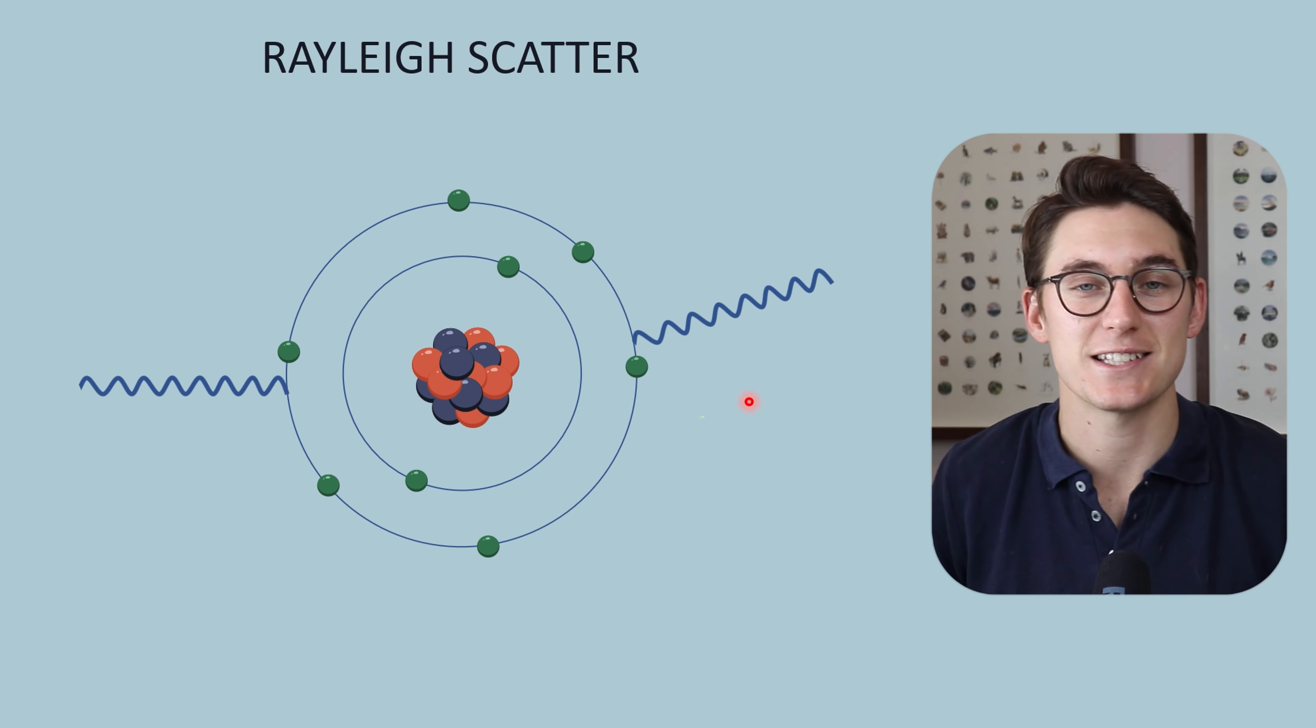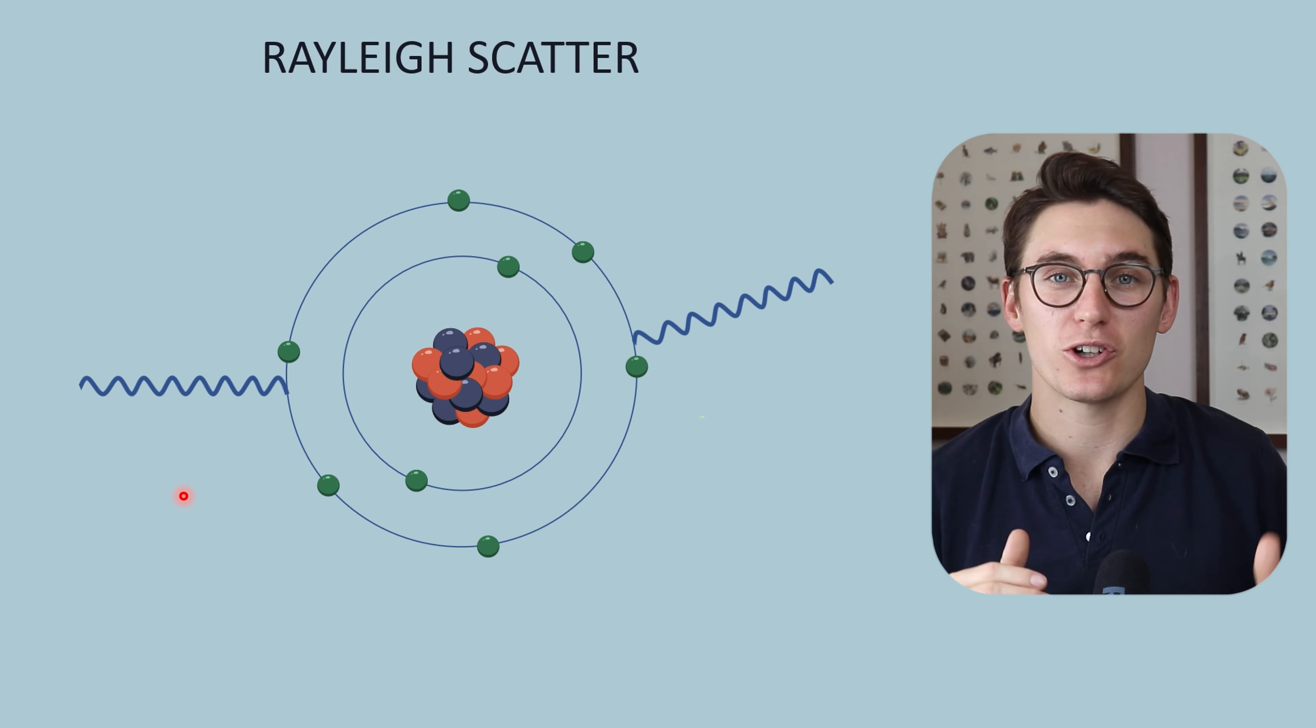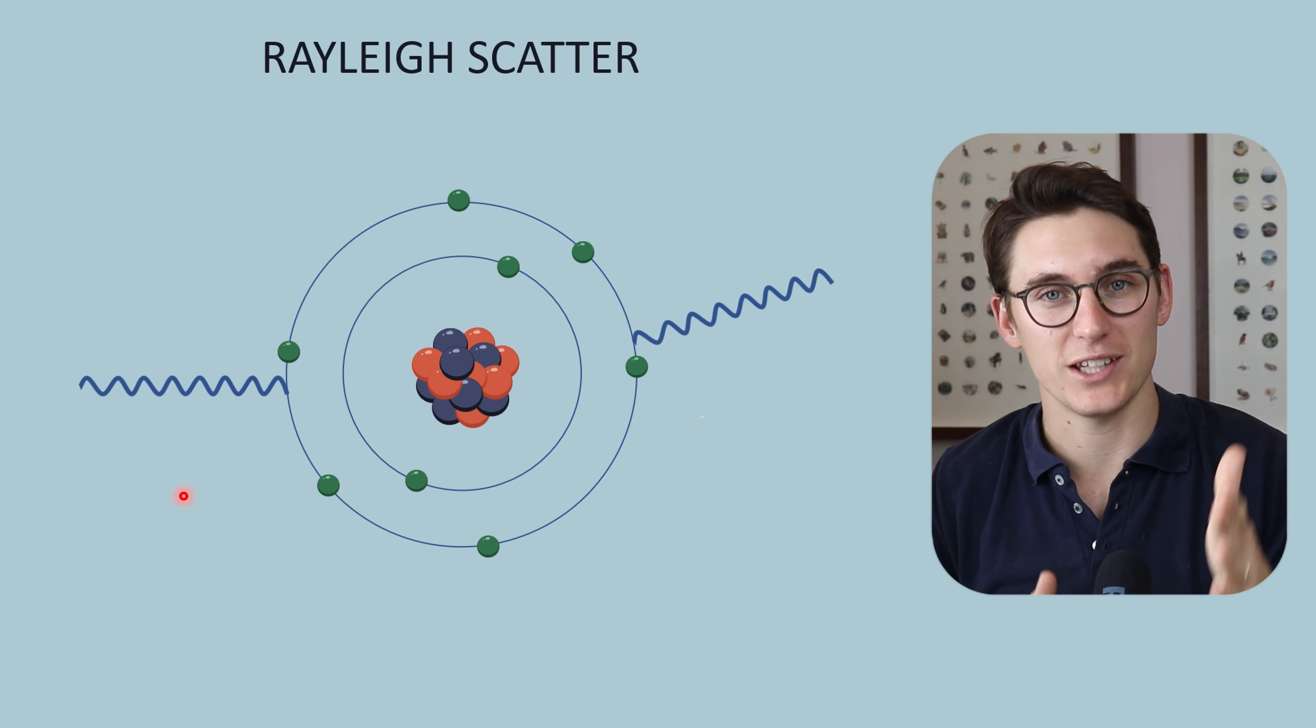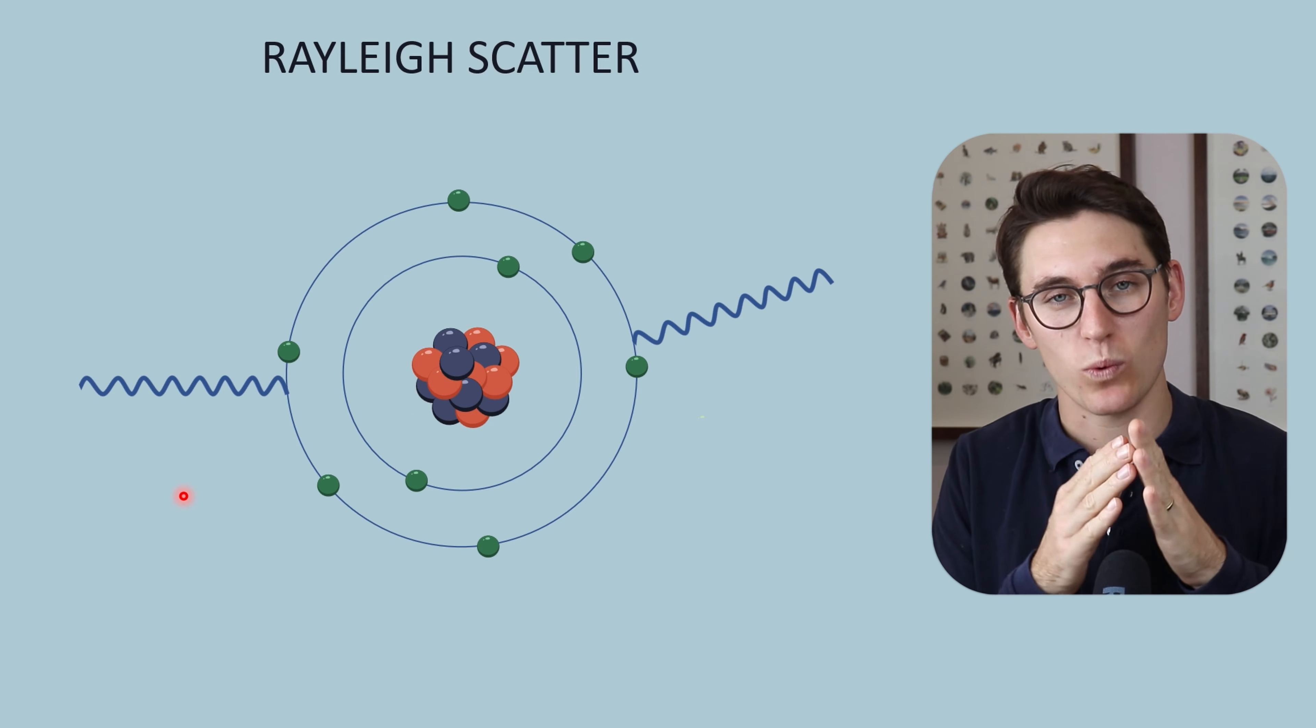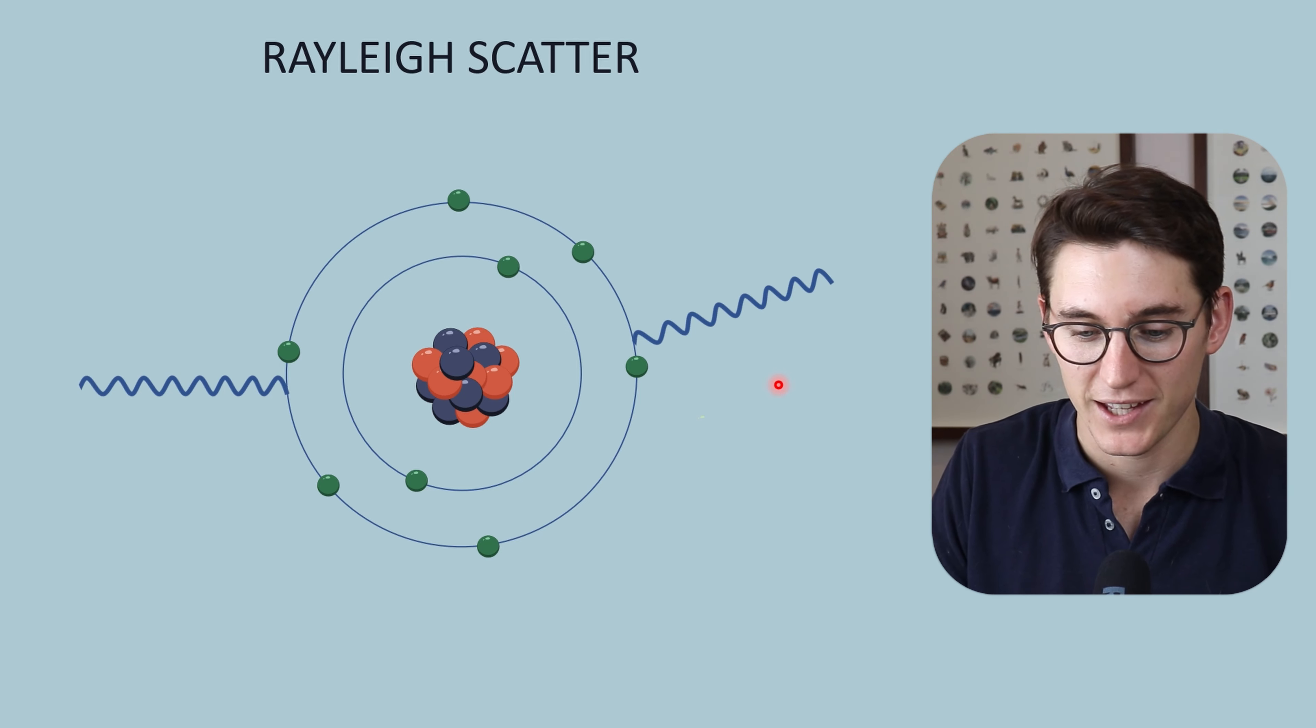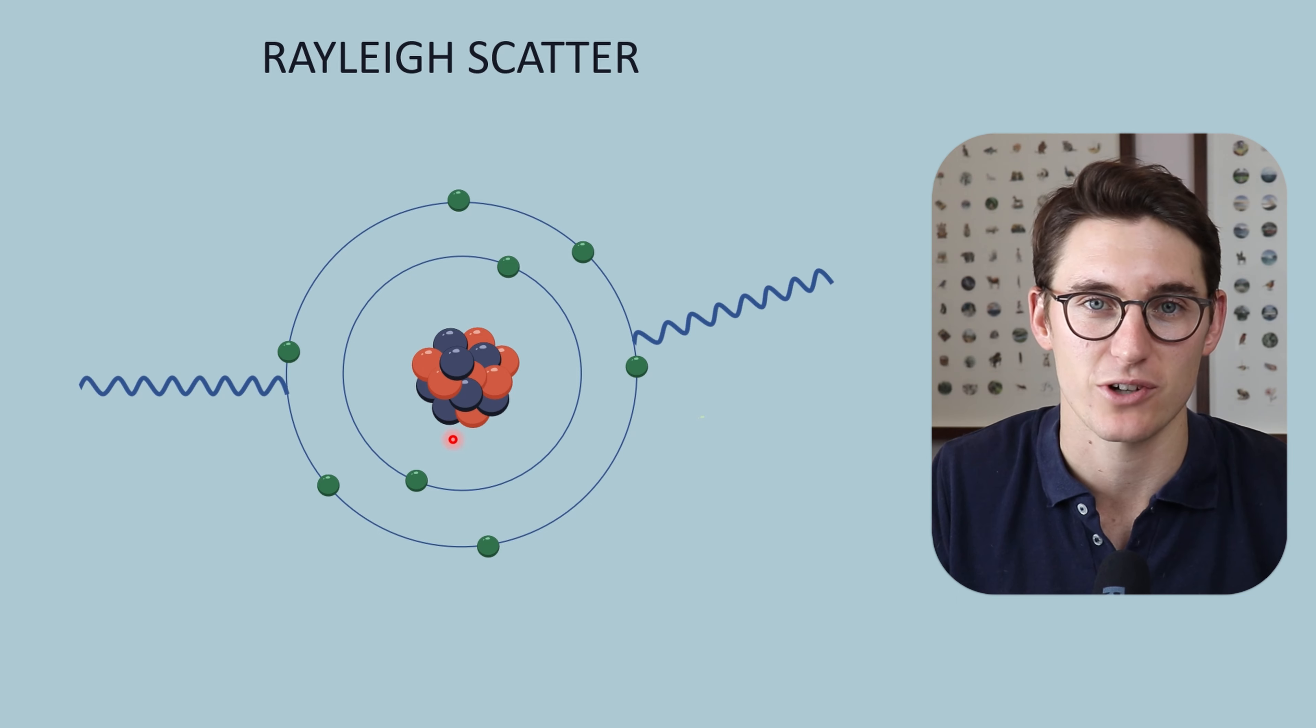This scatter angle is independent of the incident x-ray energy. When we looked at Compton scatter, the scattering angle was dependent on the incident x-ray energy as well as dependent on the amount of energy that we've given off to our photoelectron. Here, this scatter angle is independent of this incident x-ray energy.